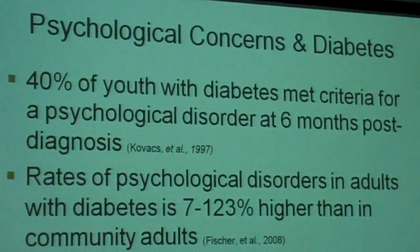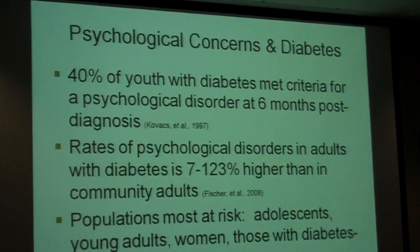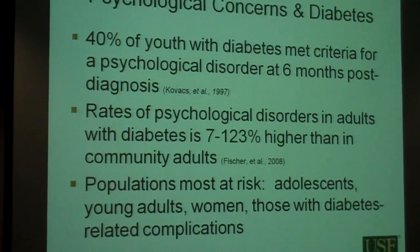I'd like to start by emphasizing how common psychological concerns are in people with diabetes. A number of studies have looked at this in different ways — sometimes using questionnaires to measure psychological stress, other times using formal diagnostic interviews. That's why you see on the slide some differences in the ranges of psychological disorders reported. But in general, about 40% of children with diabetes met criteria for some psychological disorder after diagnosis — more than twice what we would expect in a general population.